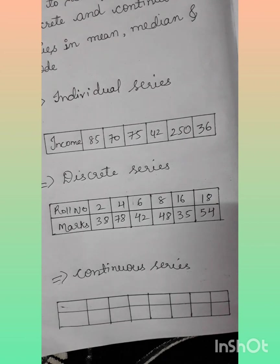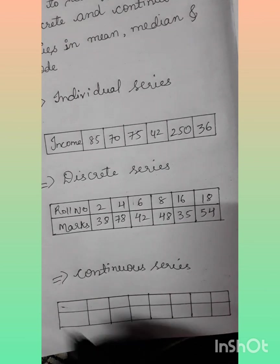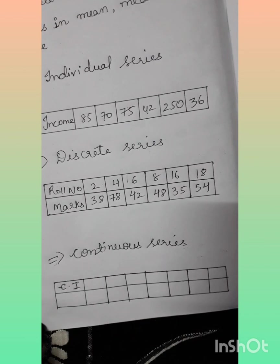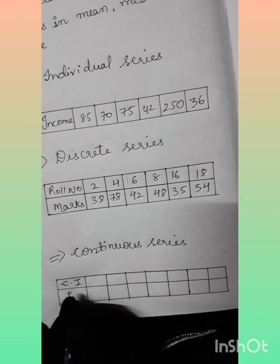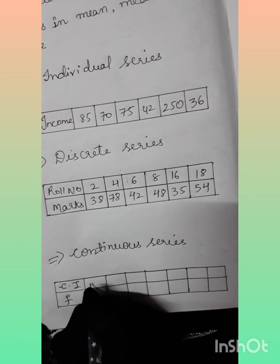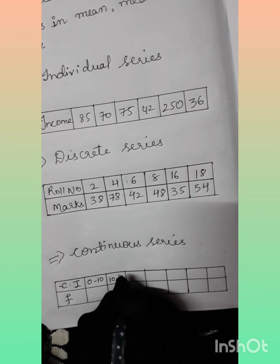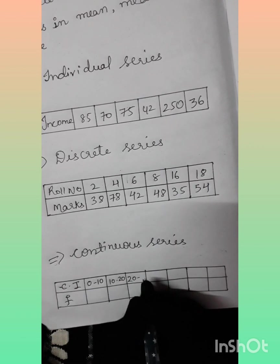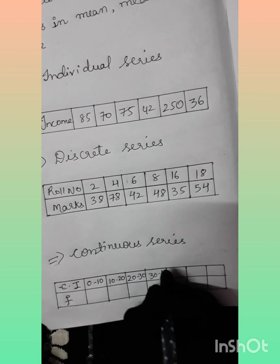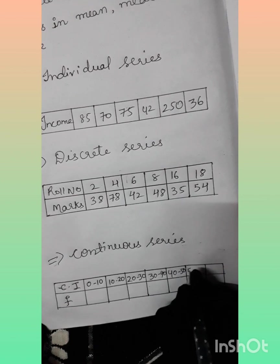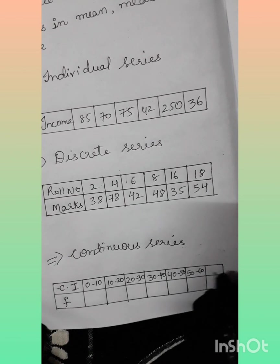For discrete, two lines. The third series is the continuous series. How can we identify this? Class intervals will be included, for example: 0 to 10, 10 to 20, 20 to 30, 30 to 40, 40 to 50, and so on.